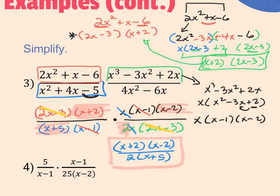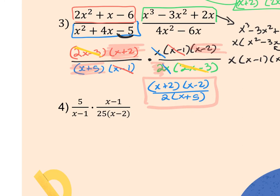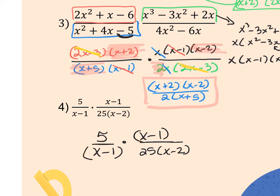The next one is pretty simple — nothing to factor, just look for things to simplify. Rewrite it as 5 over x minus 1, times x minus 1 over 25 times x minus 2. Simplify x minus 1 with x minus 1, and simplify 5 and 25 to leave a 5 in the denominator. When simplifying, a 1 is left behind — so 1 times 1 in the numerator, and 5 times x minus 2 in the denominator.